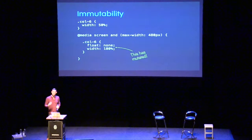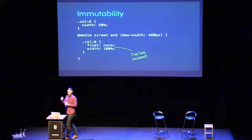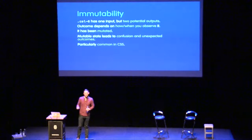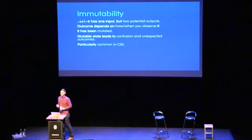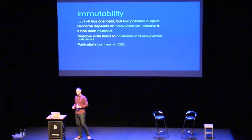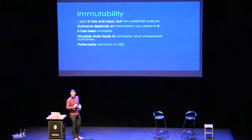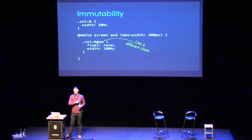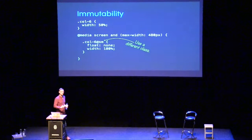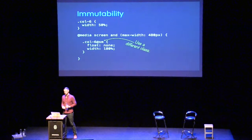`col6` has one input but two potential outputs, and those outputs vary depending on how and when we view them — it's been mutated, which leads to confusion and unexpected outcomes. CSS is almost entirely designed around mutation. We can circumvent it using what I call responsive suffixes: instead of mutating `col6`, we use a completely different class — `col6` and `col6@small`. Two inputs, two outputs — we're no longer mutating anything.